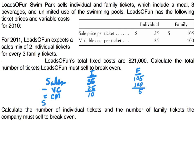Next we have our sales mix, which the problem tells us is two individual for every three family. So in our little basket or pod of tickets, we have two individual and three family — that's five tickets total. The three family tickets contribute $15 in total, and the two individual tickets contribute $20 in total, for a total contribution of $35. Dividing $35 by the five tickets gives us a weighted average contribution margin per ticket of $7.